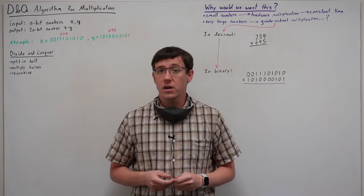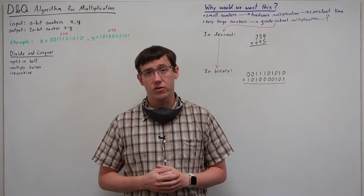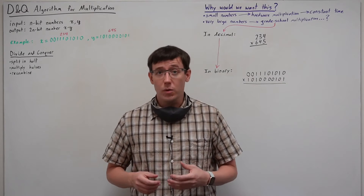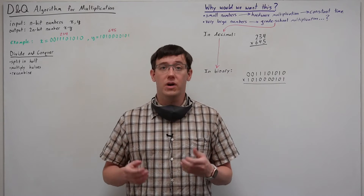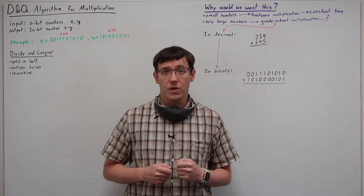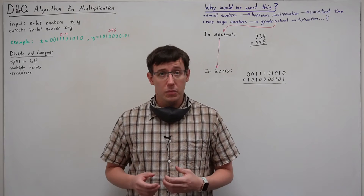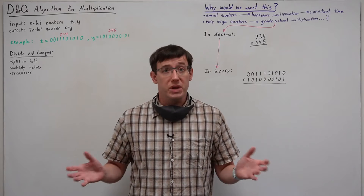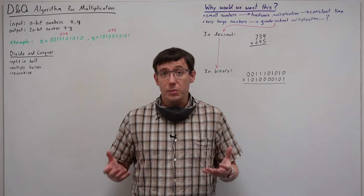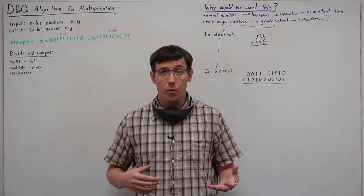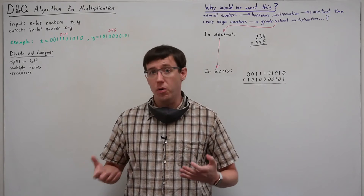Most of the time in computer science we think of multiplication as a constant time operation. And as long as the numbers that we're multiplying are small enough to fit in the bit width of our CPU, that's a good assumption. But sometimes we might want to multiply very very large numbers — think millions of bits. For such large numbers, we can't rely on our 64-bit CPUs to perform the multiplication for us; we have to write an algorithm that will produce the bits of the output number.